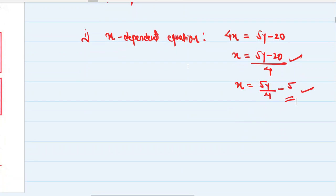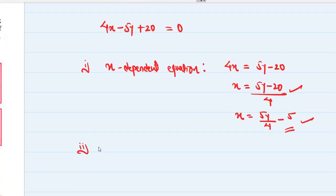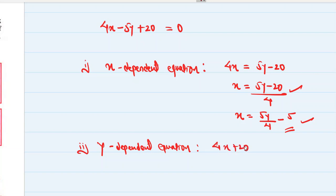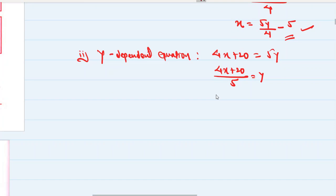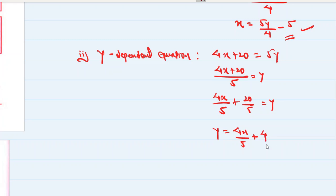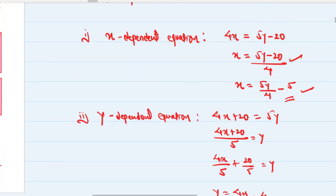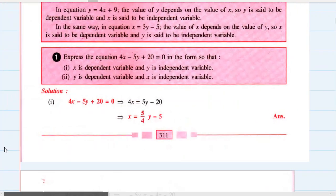So y = 4x/5 + 4 is the y-dependent equation, meaning y is the dependent variable. Here x is the dependent variable in the x-form. Whoever is the subject of the formula is the dependent variable, and whoever is not the subject is the independent variable. Did you understand? Very easy. Let's go ahead.